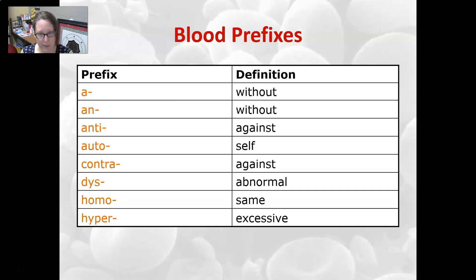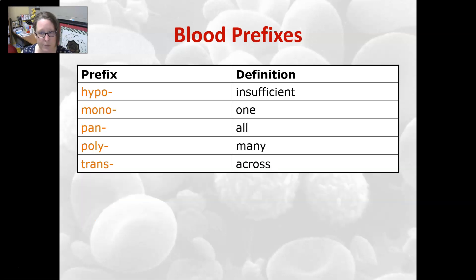Your blood prefixes: a and an both mean without; anti is against, as in antibodies; auto is self; contra is against; dis is abnormal; homo is same; and hyper is excessive. Hypo is insufficient; mono is one; pan means all, usually referring to all cells being increased or decreased, usually decreased; poly is many; and trans means across, like a transfusion.